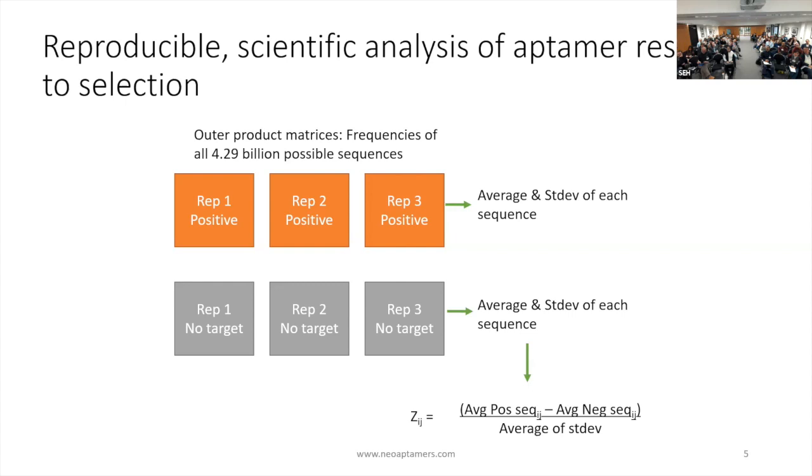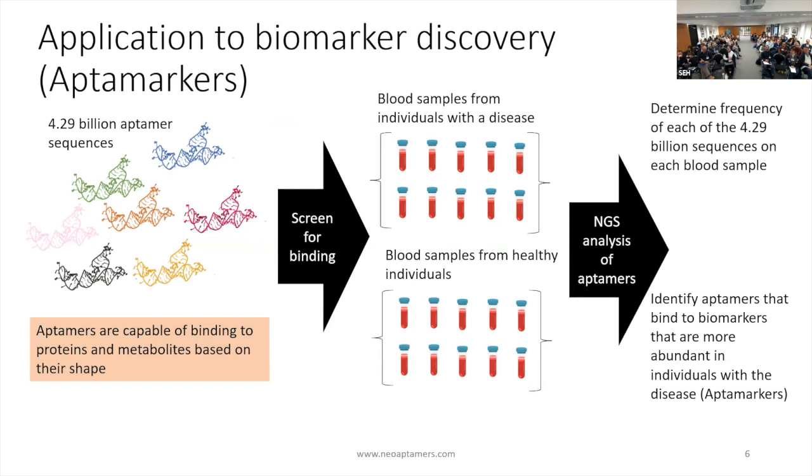We're building a knowledge base. Every time we do a new selection, it's the same sequences, so we can look at the same fingerprint and we continue to build the knowledge base as we go. We're using this at our lab in Paris, Neoneuron, where we call it aptamer markers. This is an agnostic discovery. We use the same library, the 4.29 billion, and we just put them in different blood samples. Blood samples of people with the disease, blood samples of people without disease, and we're screening for 4.29 billion epitopes in the blood with each one. We then do that analysis of the contrast between individuals with the disease versus those without, and we identify the aptamers most meaningful for diagnostics.